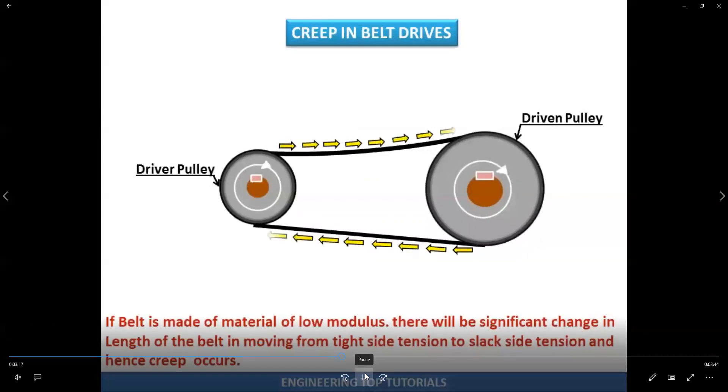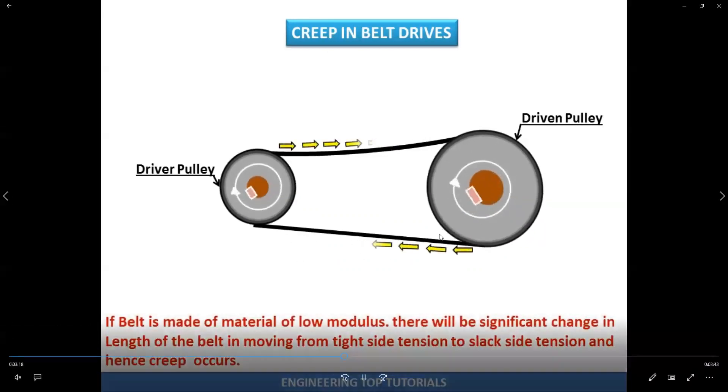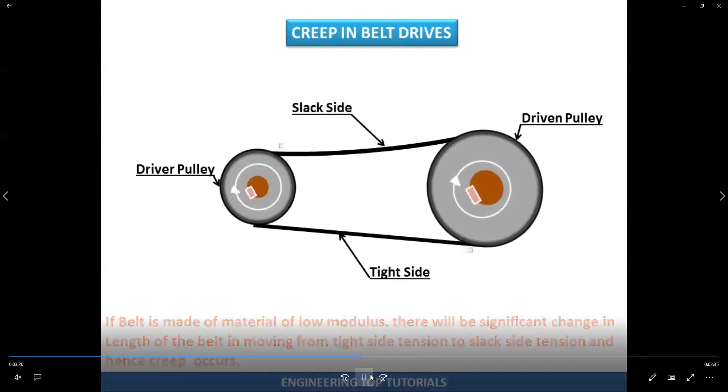What is the meaning of creep? If the belt is made of material of low modulus because of the rubber, the length of the belt will be moving from tight to the slack side. This is called creep. It becomes slack, becomes longer, so it's too long. Transmission power will be ineffective.